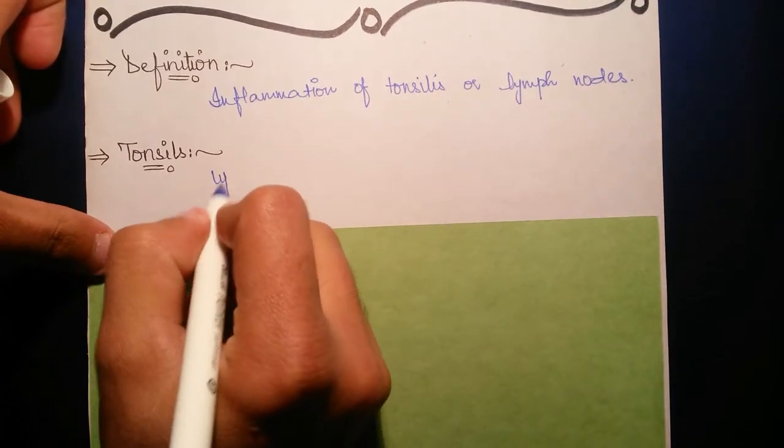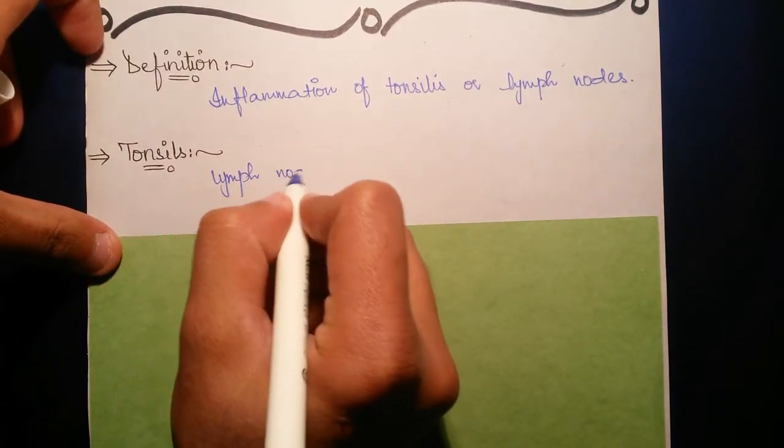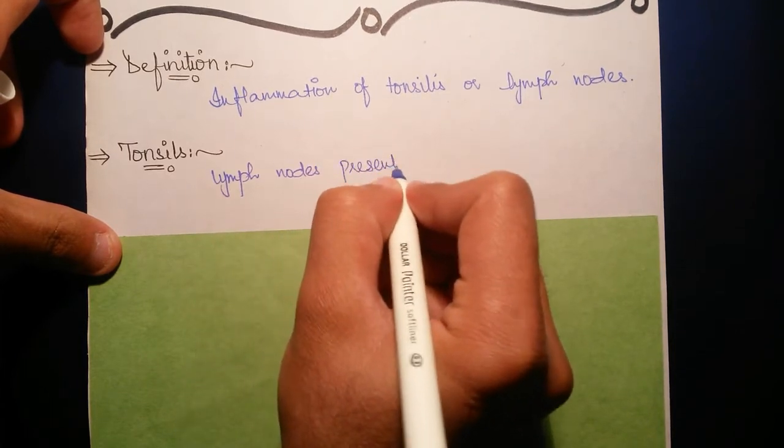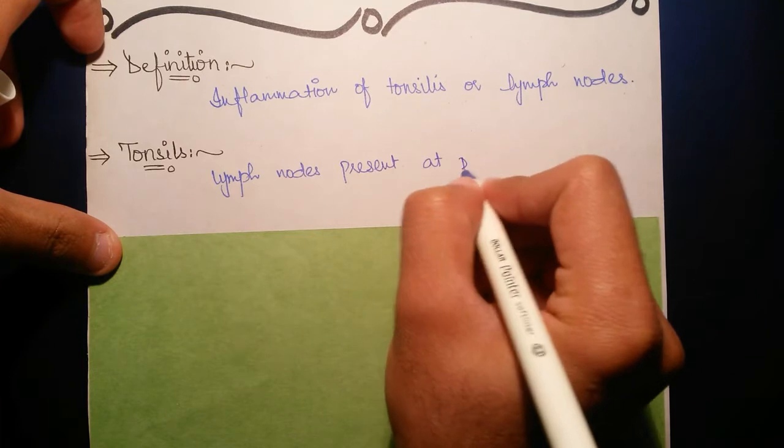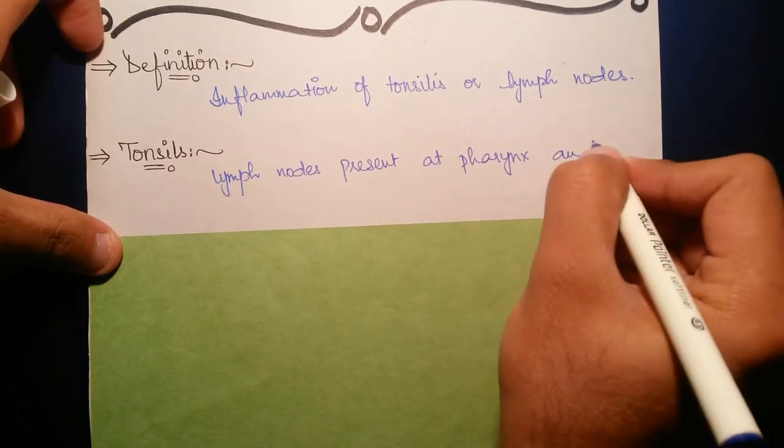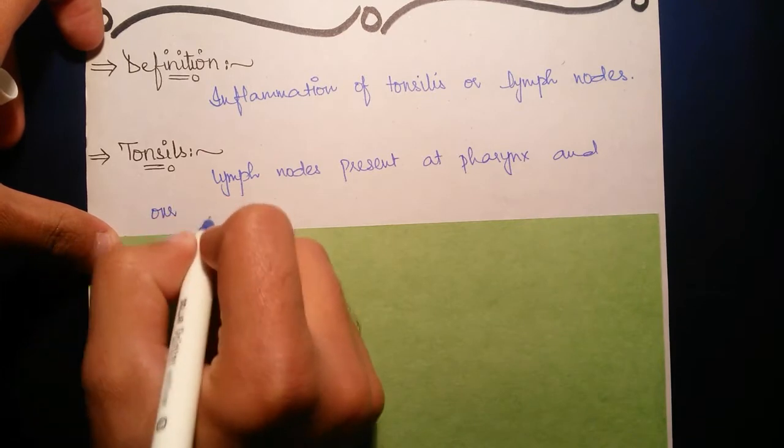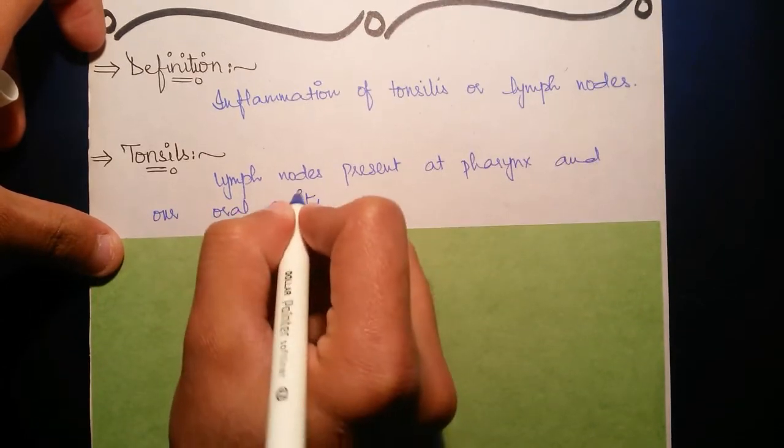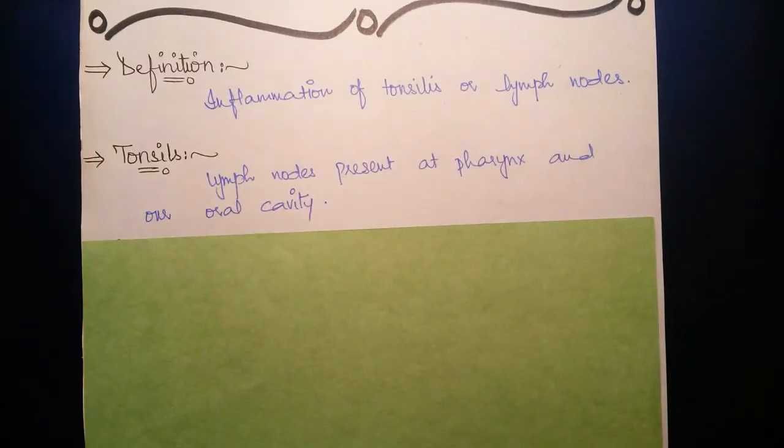Lymph nodes present at pharynx and our oral cavity are known as tonsils. Infection of these lymph nodes is basically known as tonsillitis.